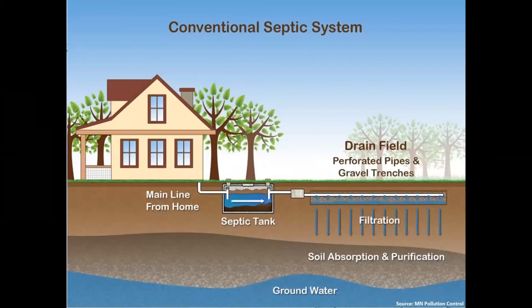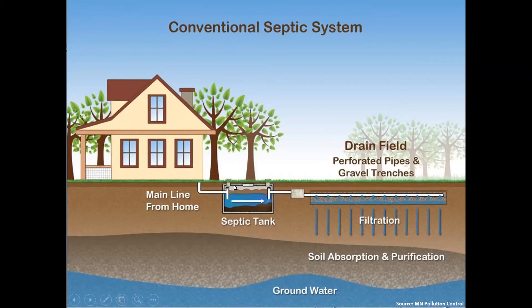A conventional septic system is a very straightforward system relying on gravity. You have a septic tank and then a distribution box which distributes the wastewater evenly over the soil in a number of trenches. The trenches tend to be several feet deep. The septic tank may also be buried several feet deep and may or may not have access ports depending upon the age. Newer systems tend to have access ports with lids right at the ground surface, making it easier for the pumper to pump the tank.